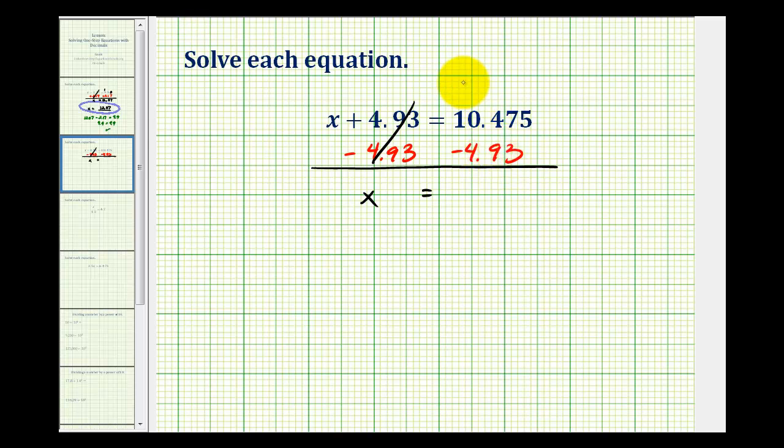Now, before we subtract, let's bring down the decimal point. And we'll also add a zero here in the thousandths place value. And now we'll subtract as we normally would. Five minus zero would be five. Seven minus three would be four. Here, we have to borrow. So we'll change the 10 to a nine. So this is now 14. 14 minus nine would be five. And nine minus four would be five.